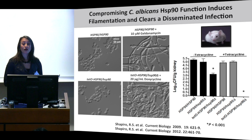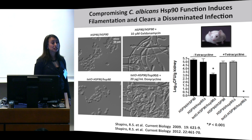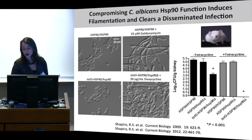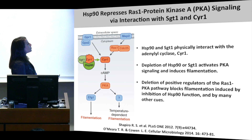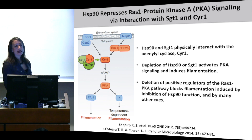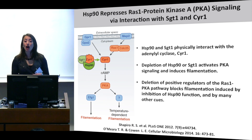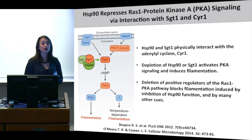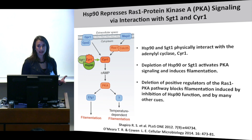We've also worked to understand how Hsp90 regulates morphogenesis — it's very different than how it regulates drug resistance; calcineurin is not a key player. It works through different pathways, including the RAS signaling pathway. We found that Hsp90 together with a co-chaperone called SGT1 physically interacts with the adenylyl cyclase CYR1. If we deplete Hsp90 or SGT1, we activate signaling through this cascade, and deleting any positive regulators of the cascade completely blocks filamentation in response to Hsp90 inhibition.